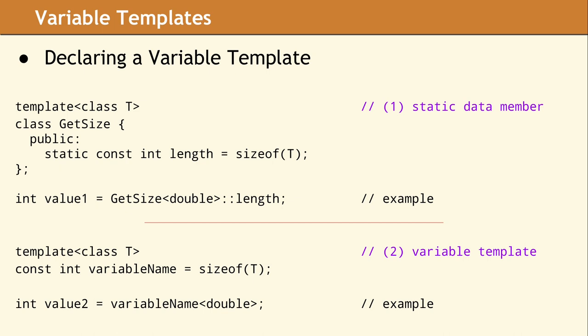This is initialized to the size of the data type T. In order to access value2, we use the name of the template variable, followed by the template parameter of double.